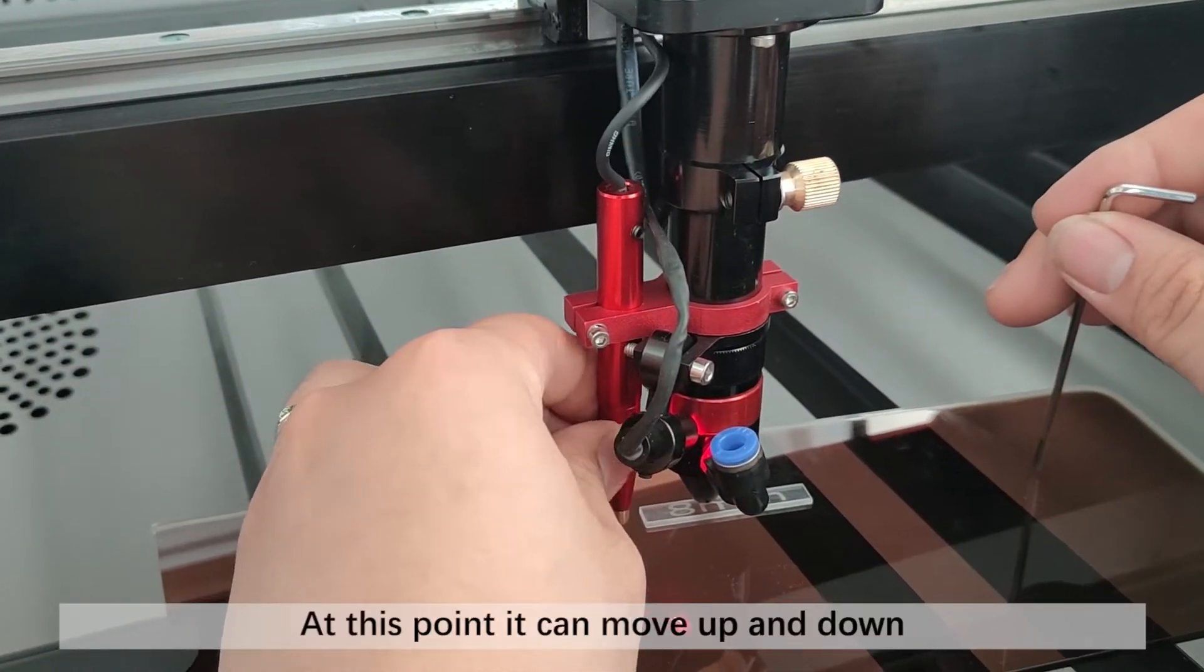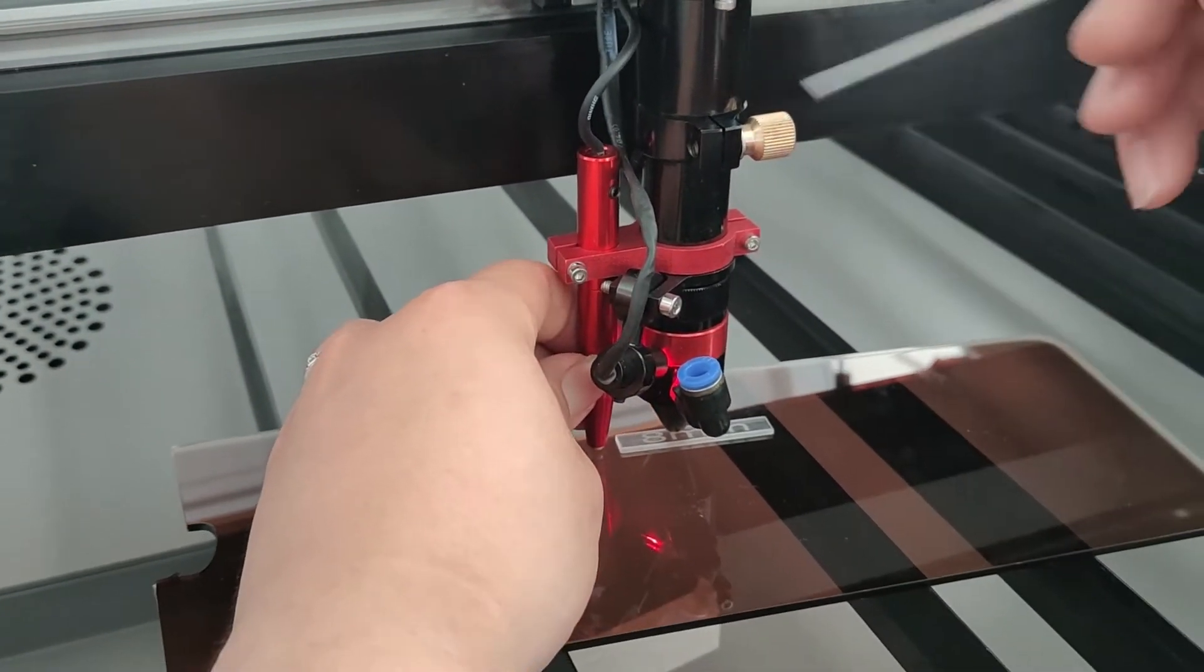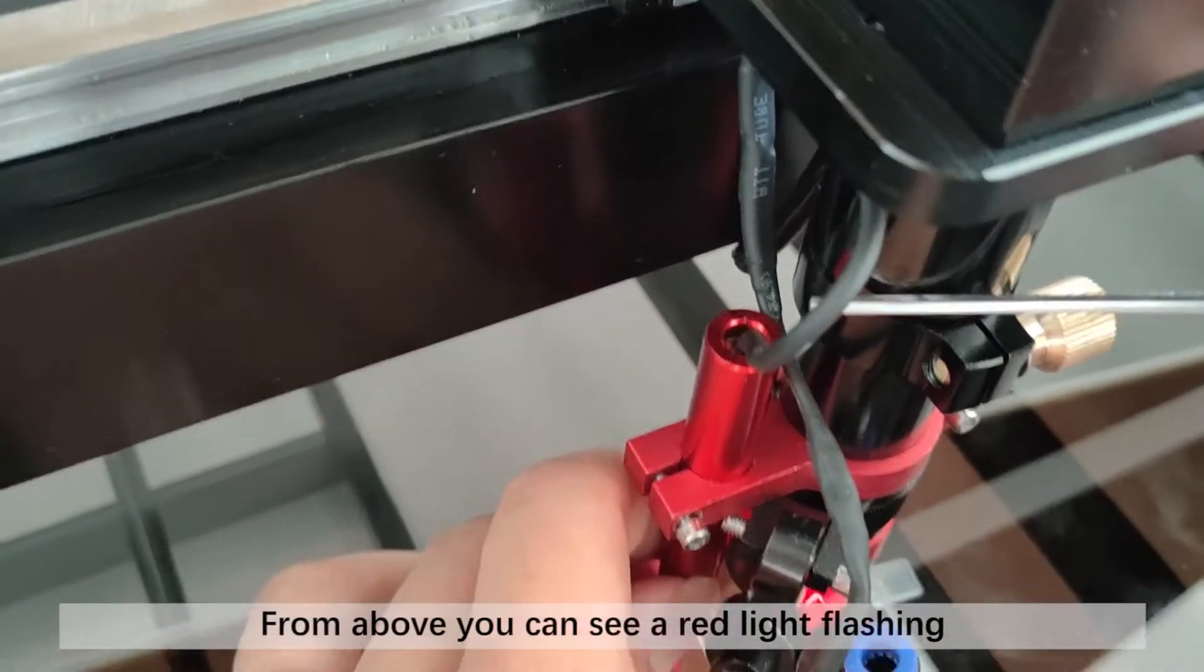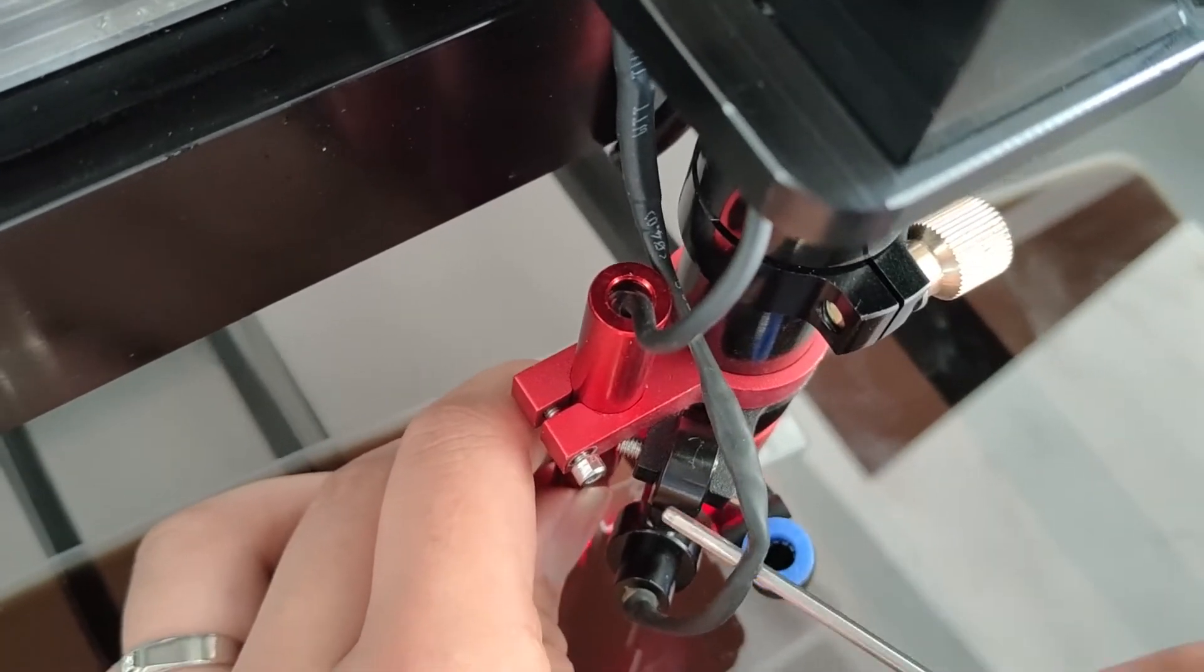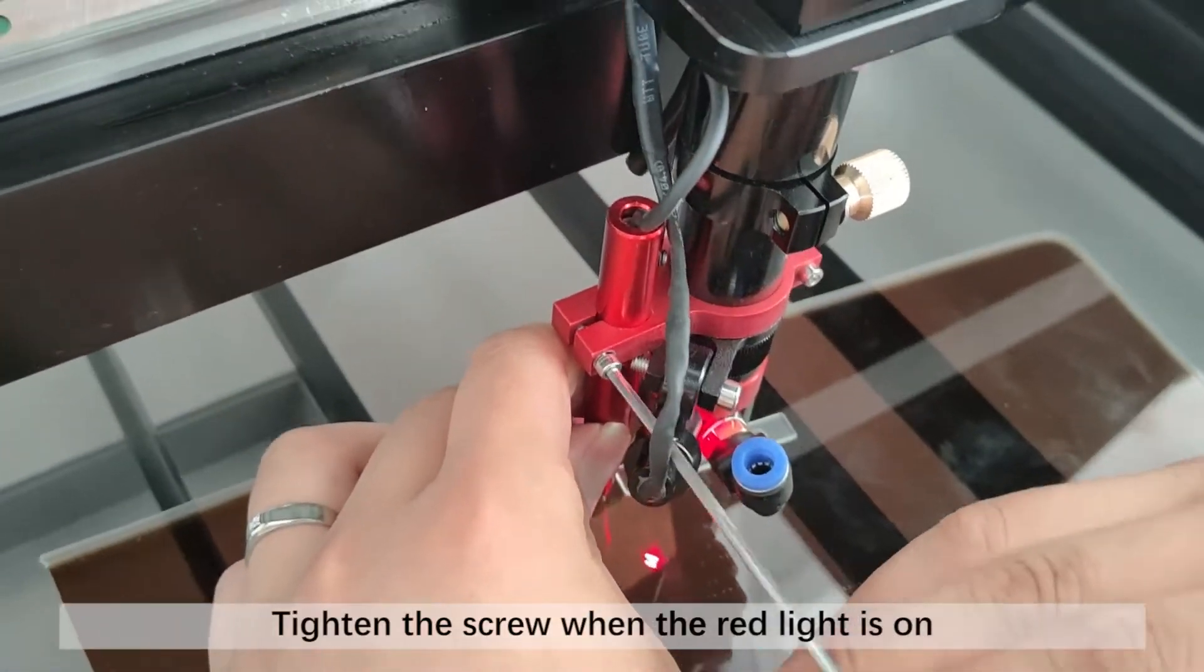At this point it can move up and down. From above you can see a red light flashing. Tighten the screw when the red light is on.